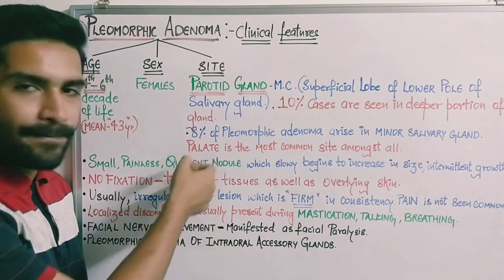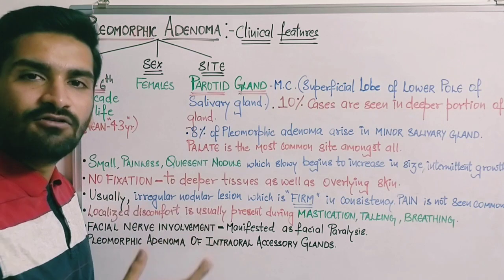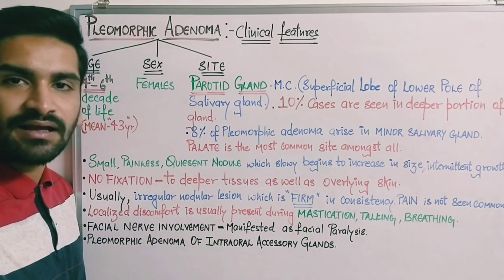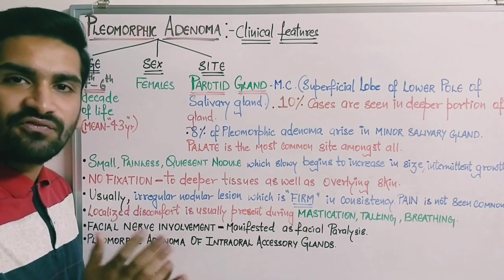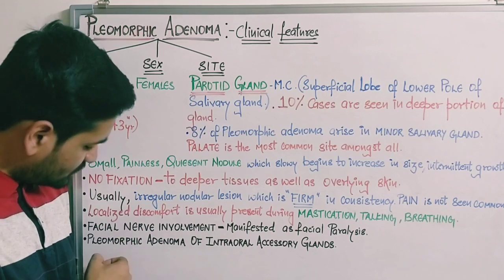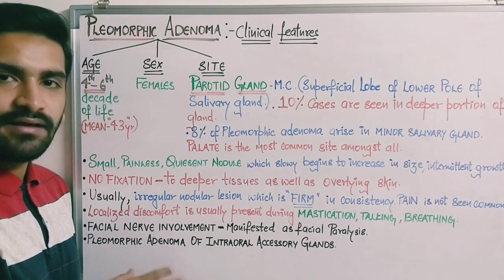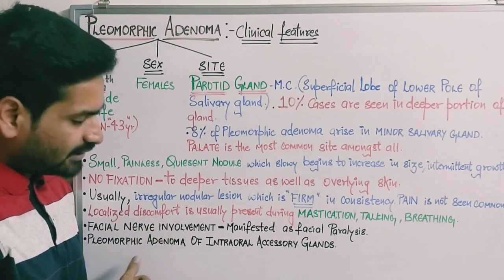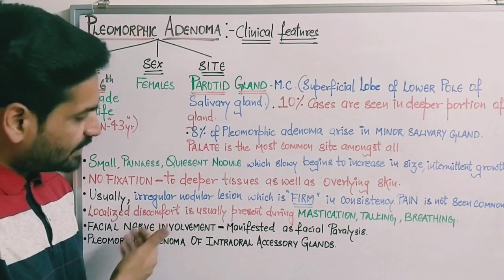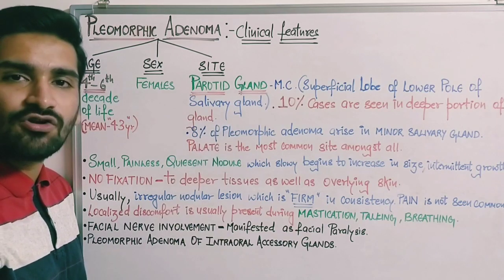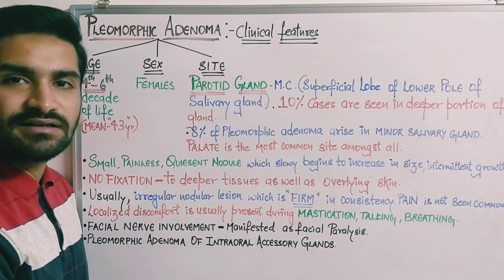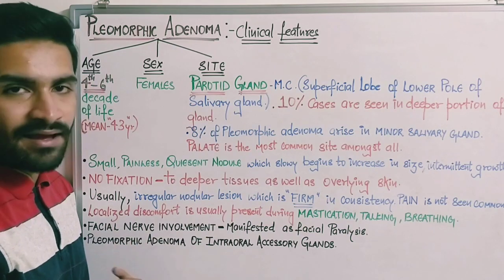Pleomorphic adenoma of intraoral accessory glands most commonly occurs in the palate, typically being one to two centimeters in size. It is slightly firm in consistency but is not fixed to bone or mucosa, so it remains slightly movable — though not as movable as tumors occurring in the superficial lobe of the parotid gland. This concludes the discussion of the clinical features of pleomorphic adenoma.